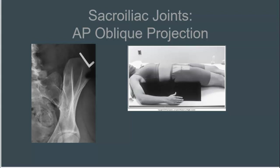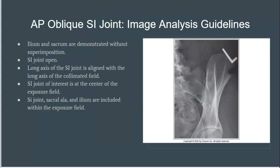The long axis of the SI joint should be aligned with the long axis of the collimated field. The SI joint of interest should be demonstrated at the center of the exposure field. The SI joint, the sacral ala, and ilium should all be included within the exposure field.